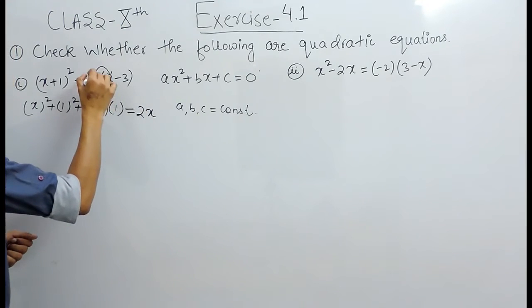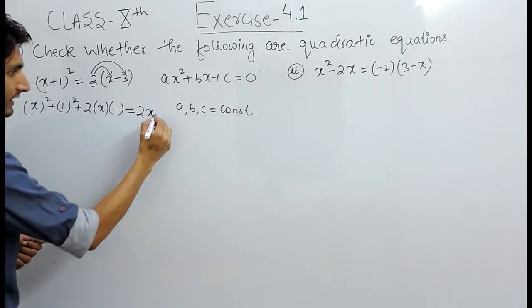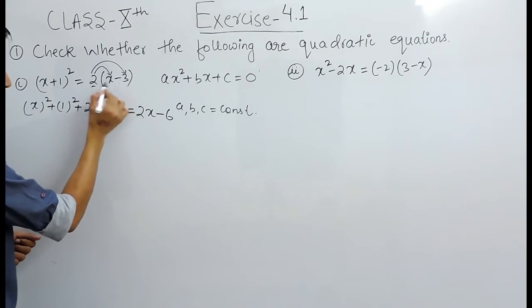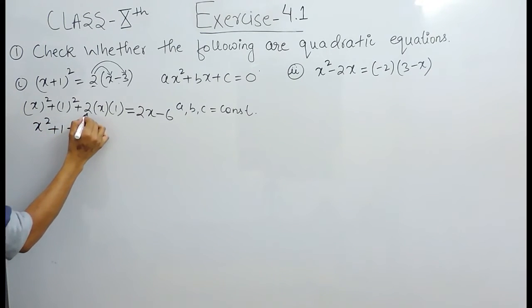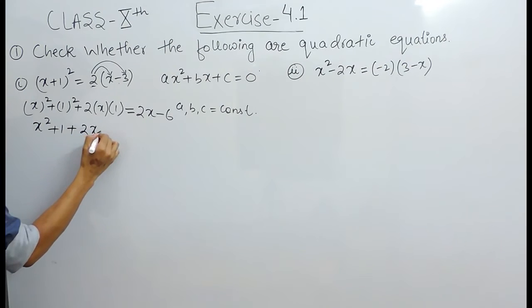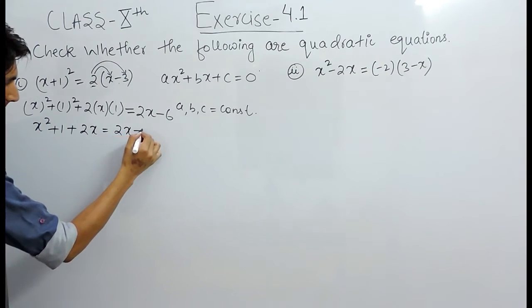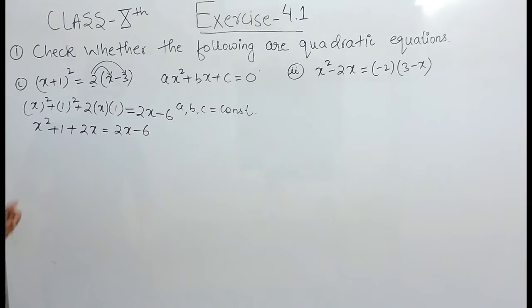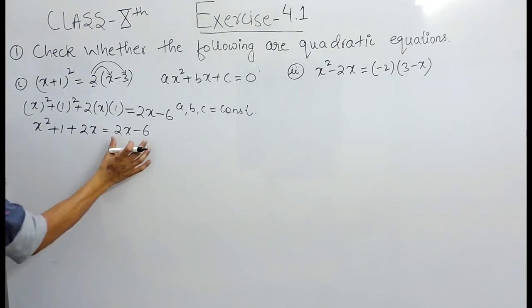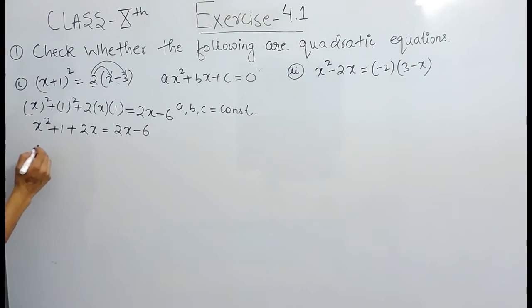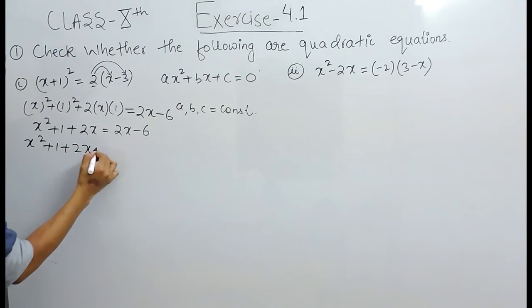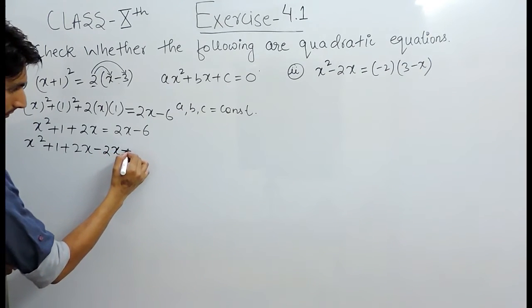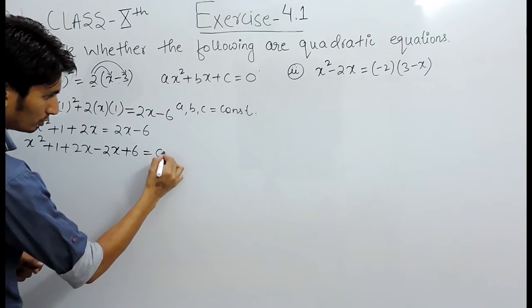This gives 2x, and when 2 is multiplied by 3, we get minus 6 because minus and plus multiplied gives minus. Solving this, we get x squared plus 1 plus 2x equals 2x minus 6. Now shifting all terms to this side, this becomes x squared plus 1 plus 2x minus 2x plus 6 equals 0.